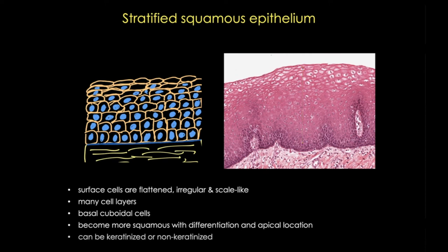Stratified squamous epithelia can be keratinized, as in the skin or gums, which helps protect against dehydration and abrasion, or non-keratinized, as in the lining of your cheeks, the esophagus, or the vagina.